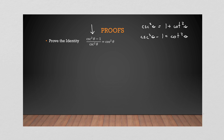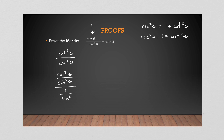So the left-hand side becomes cot²θ over csc²θ. Now I'll convert into cosine and sine: cot²θ is cos²θ / sin²θ, and csc²θ is 1 / sin²θ. Since this is division, I'll flip and multiply — I end up with cos²θ / sin²θ times sin²θ / 1. The sin²θ cancels out, and I'm left with cos²θ.